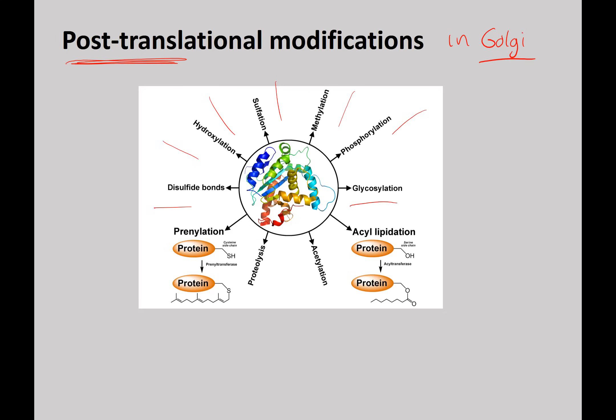One objective says to understand that modifications are important but not necessarily that structure equals function. You can have a protein folded — that's structure — and then have modifications put on. The modifications aren't affecting the physical structure but they are directing the function. When we talk about cell signaling and receptors more, we'll revisit this idea.